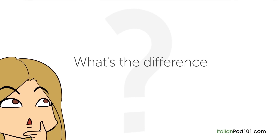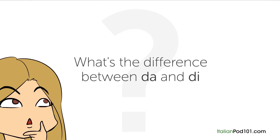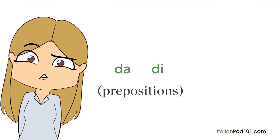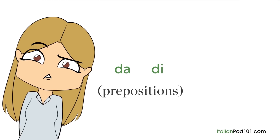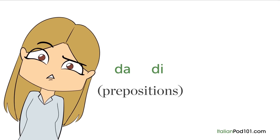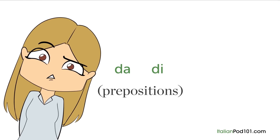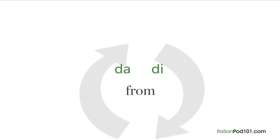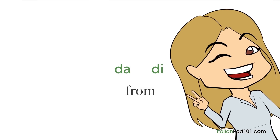The question for this lesson is: what's the difference between DA and DI? DA and DI are two Italian prepositions. They have multiple functions and meanings, and sometimes it's not easy to choose the right one. For example, both DA and DI can be translated as 'from,' but they are not interchangeable. Let's see the difference.